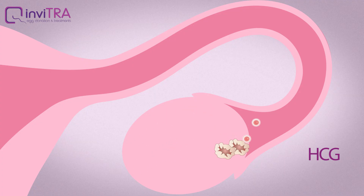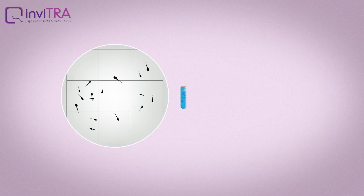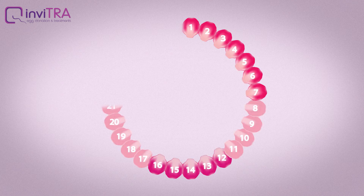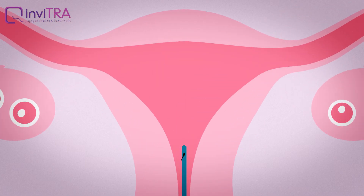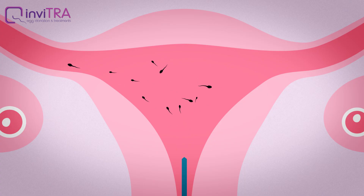When the follicles reach an appropriate size, ovulation is triggered through HCG. At the same time, sperm is prepared through a process called capacitation, in which the sperm that swim faster are selected. Once the best time to perform the fertilization is established and male sperm is prepared, the gynecologist introduces a catheter with sperm into the vagina in order to place them into the woman's uterus.